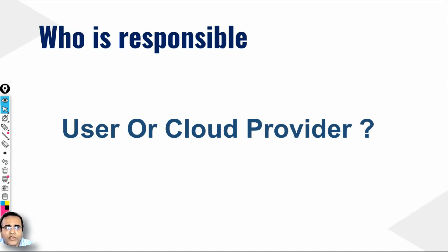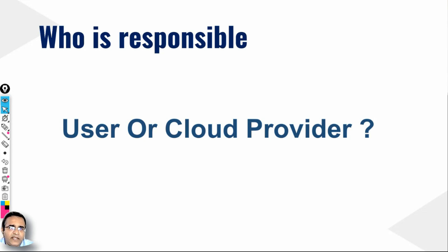In Platform as a Service — predominantly what we see with AWS instances — you create an instance and get access to the complete platform. You can choose which operating system to run, which software to install, and in what order. In SaaS you only have access to the user interface and can do application-level settings, but you have no idea what operating system is running or what code is used. In PaaS, you have access to the operating system and can do a lot more.